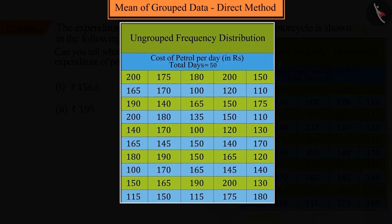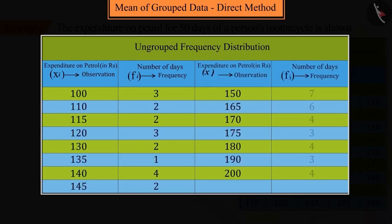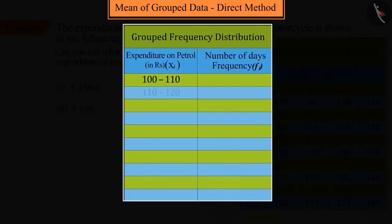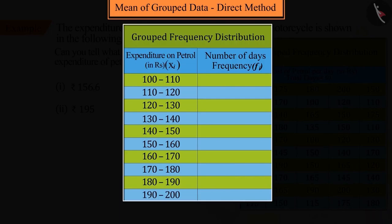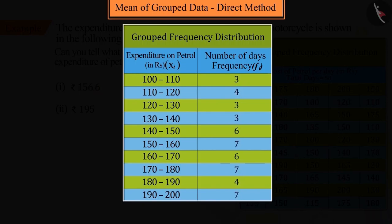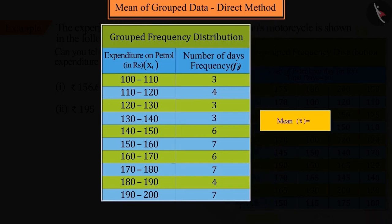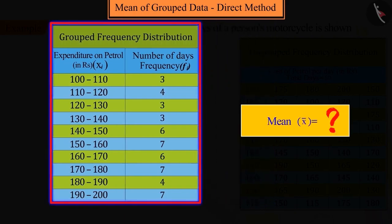we will first construct the ungrouped frequency distribution table, then classify this ungrouped frequency distribution table into groups. To construct the grouped frequency distribution table, we take a class interval of 10 as the width of grouped data, convert them into grouped data and specify the frequencies. It is represented by the following table. So now with the help of this table, can you find the mean expenditure of petrol?